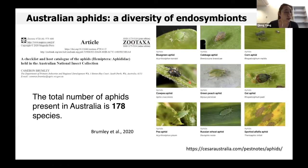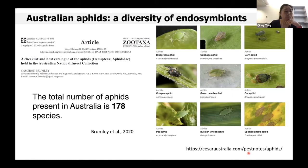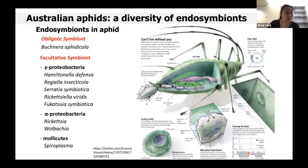Here are some of the most agriculturally significant aphid species summarized by CESAR Australia — you can find more details at the link below. The main control method for key pest aphids is through insecticide applications. However, over-reliance on chemical control is problematic, as aphids have developed resistance to insecticides with different modes of action. We are looking at ways to manipulate endosymbionts in order to reduce the risk of crop damage and plant virus transmission from key aphid pests.